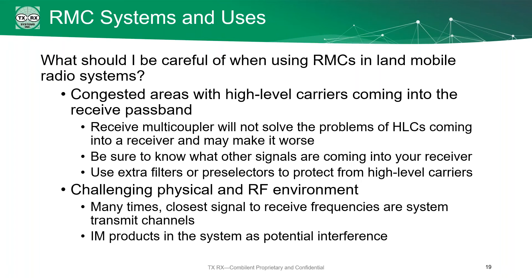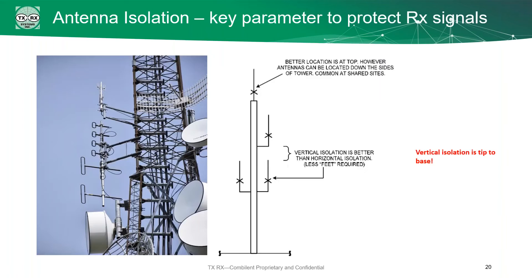There are also intermodulation products in the system because of multiple transmitters that can cause potential interference — we'll talk about that in a few moments. The easiest way to isolate your receive systems from your own transmitters is with antenna isolation: don't put the antennas near each other. If you can have some distance between your transmit and receive antennas, that buys you isolation by itself. Vertical separation is better than horizontal separation because in a vertical system those two antennas are effectively in each other's blind spots. In a horizontal situation you're going to need a lot more space between your antennas.